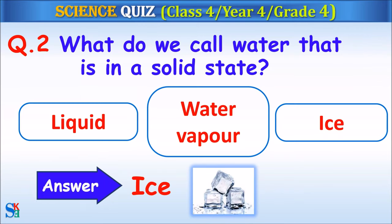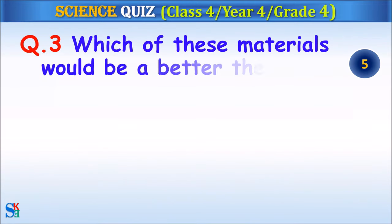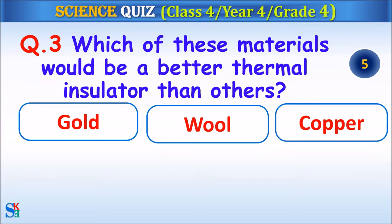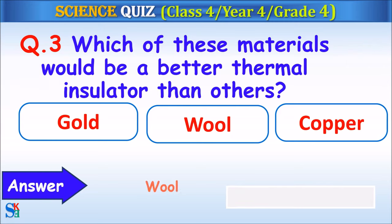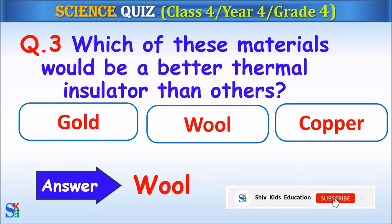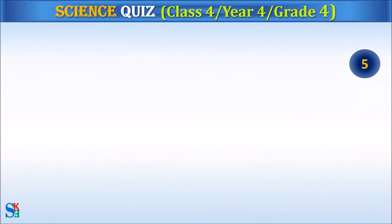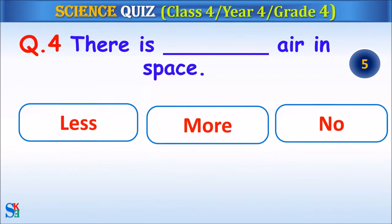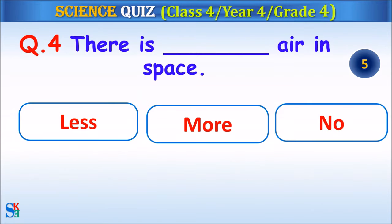The answer is ice. Question 3: Which of these materials would be a better thermal insulator than others — gold, wool or copper? Your time starts. The answer is wool. Question 4: There is less air in space, more air in space, or no air in space? Your time starts.